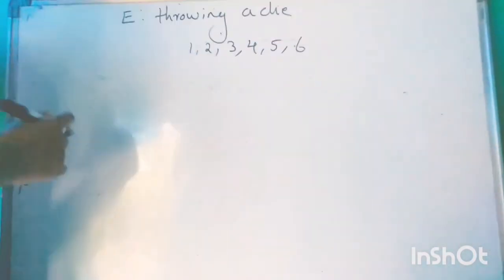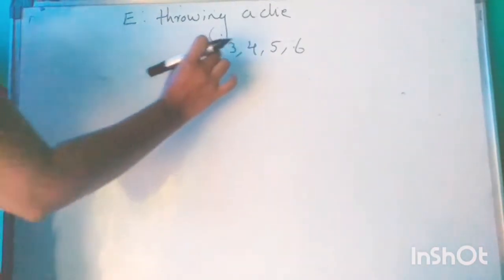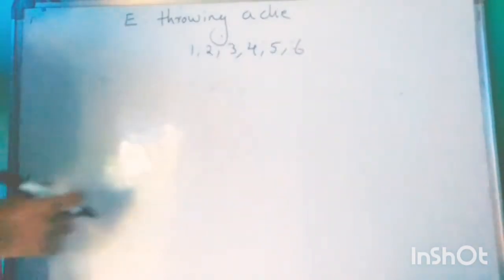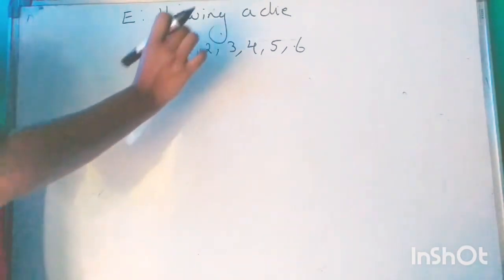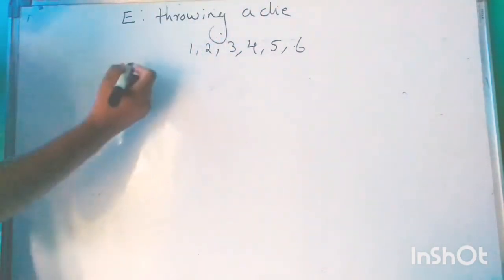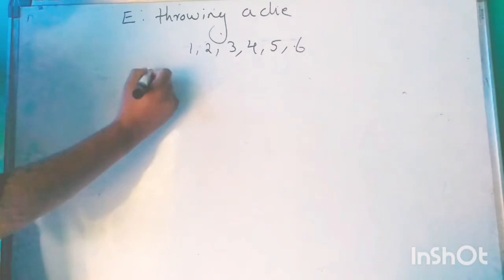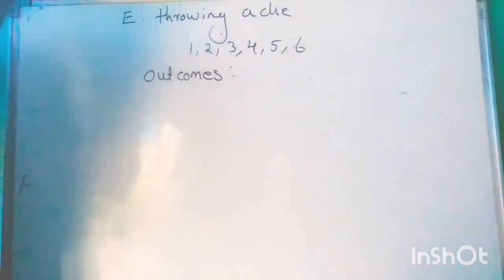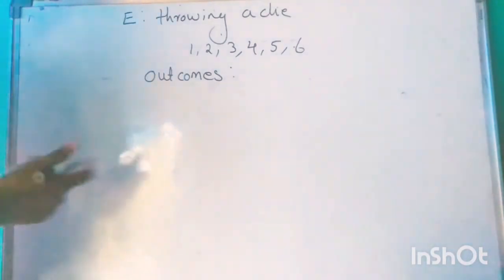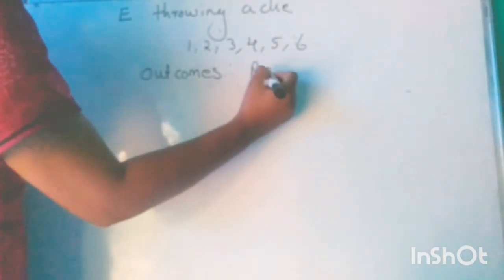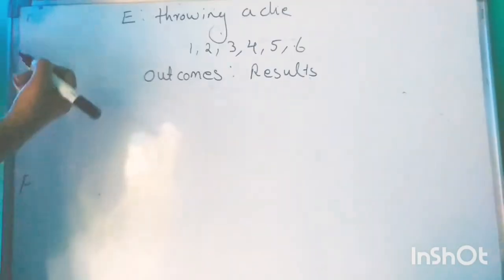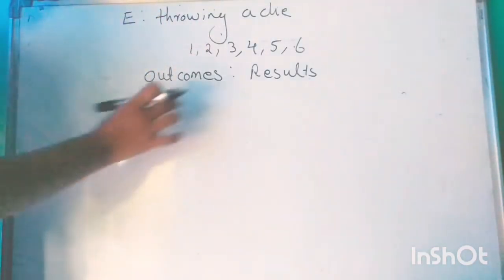The numbers 1, 2, 3, 4, 5, and 6 are the results of this experiment. The results of an experiment are called outcomes.